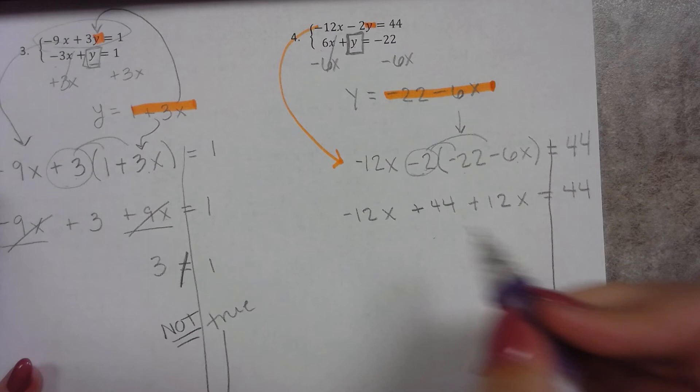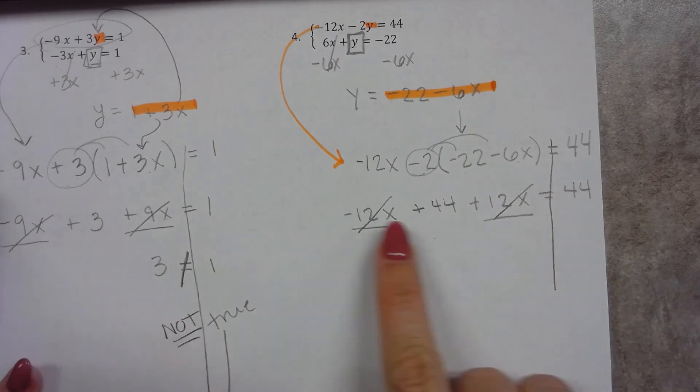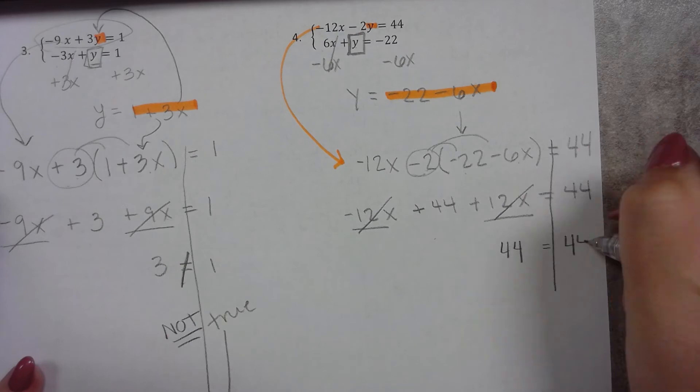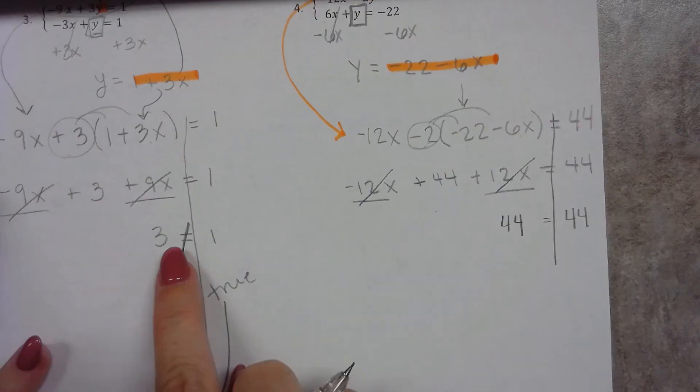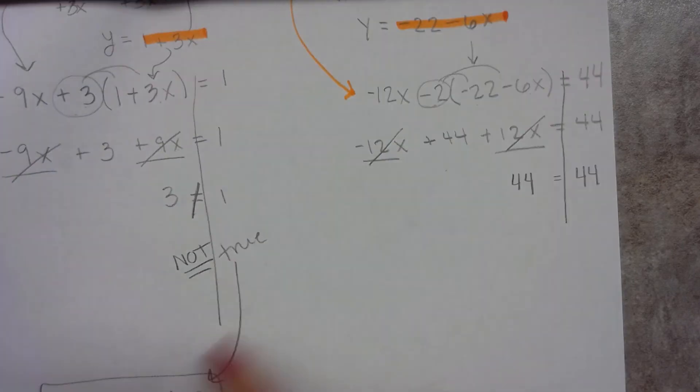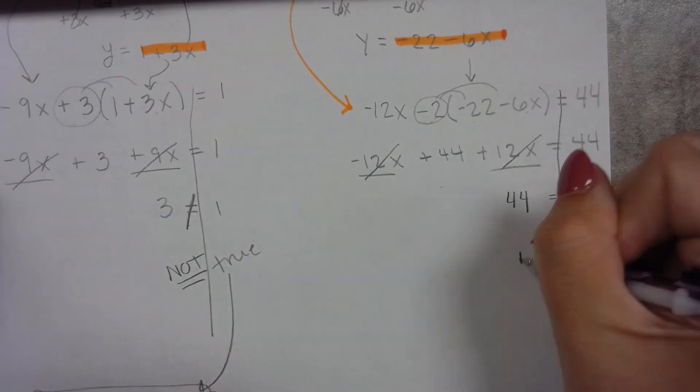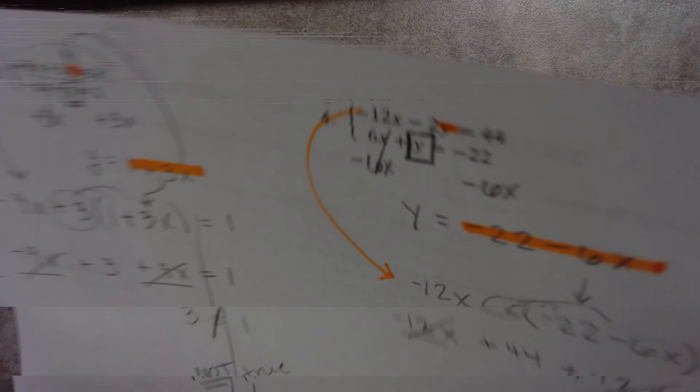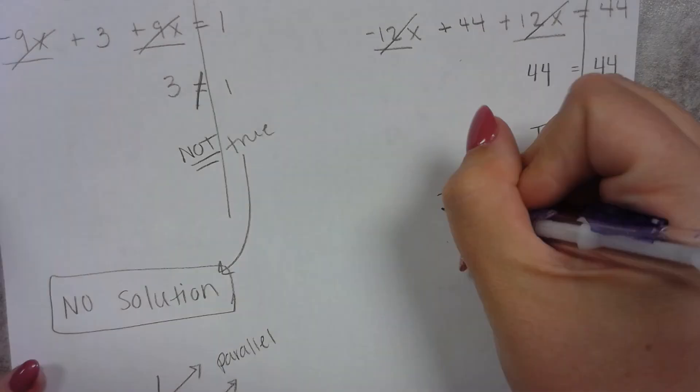So that leaves me with 44 and 44. Well over here, 3 was not equal to 1. That was not true. So that meant no solution. Well this time that is true. This is true. 44 does equal 44. So when that happens, we say that there are infinite solutions.